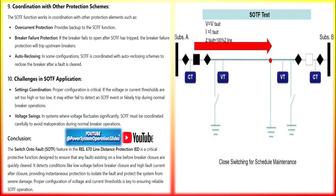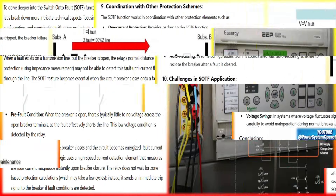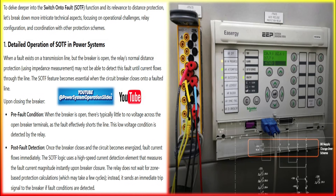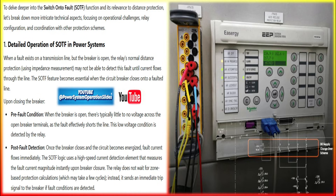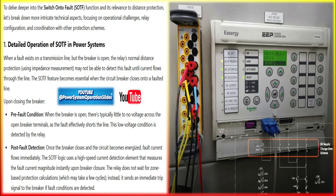In the REL670, the line distance protection IED is designed with advanced features for fault detection, including SOTF. The typical sequence for SOTF operation begins with monitoring the line voltage. The relay continuously monitors the line voltage. Before the breaker is closed, the voltage is near zero if the line is de-energized. If there is a fault, this voltage remains very low.